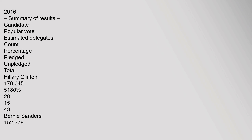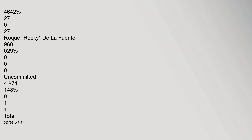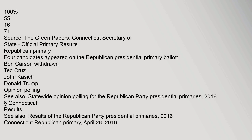2016 Democratic primary summary of results: Hillary Clinton received 170,045 votes (51.80%), with 28 pledged delegates, 15 unpledged, totaling 43. Bernie Sanders received 152,379 votes (46.42%), with 27 pledged delegates, 2 unpledged, totaling 27. Rocky De La Fuente received 960 votes (0.29%), with 0 delegates. Uncommitted received 4,871 votes (1.48%), with 1 delegate. Total: 328,255 votes, 5 pledged, 16 unpledged, 71 total. Source: The Green Papers, Connecticut Secretary of State Official Primary Results.